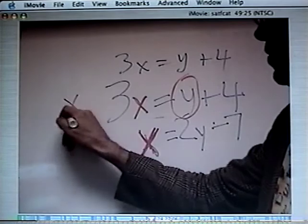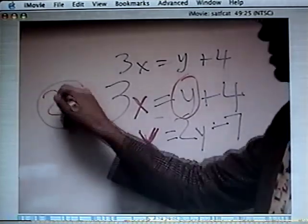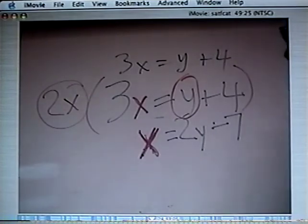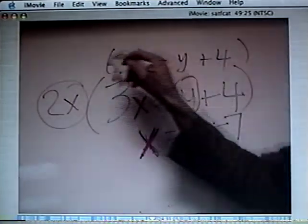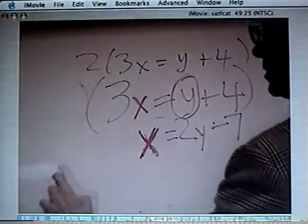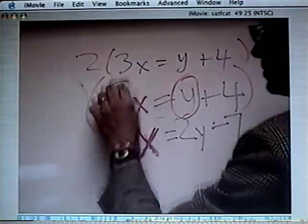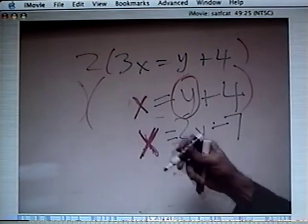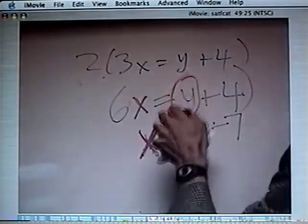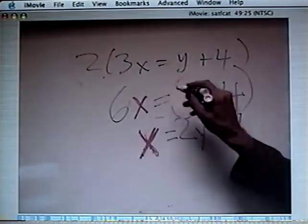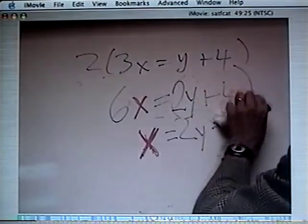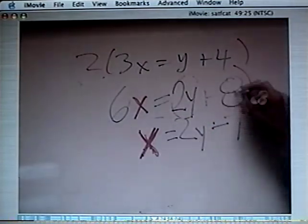We're going to multiply the whole thing by 2. This whole thing, all the way through. So if I multiply it by 2, I'm going to get 2 times 3, absolutely, it's going to be a 6. 2 times y, 2y. 2 times 4, this will be an 8.